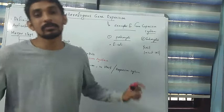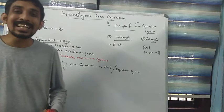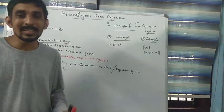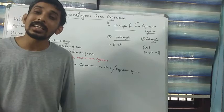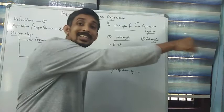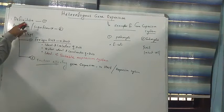Heterologous gene expression means a gene is expressing within a cell which is a foreign cell — so it is not a natural environment. If a gene is expressing outside itself, such gene expression is called heterologous gene expression. In biotechnology we normally create genetically modified organisms by inserting a foreign gene into a foreign cell, and that expression is called heterologous gene expression.